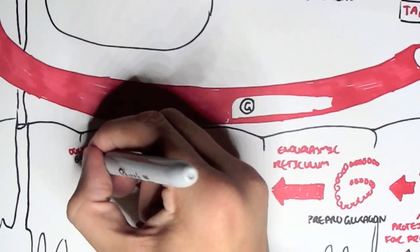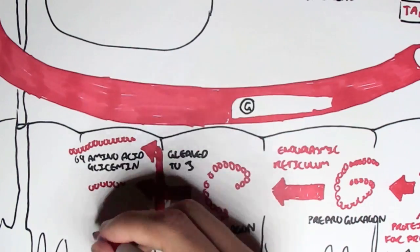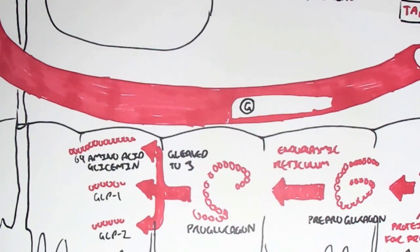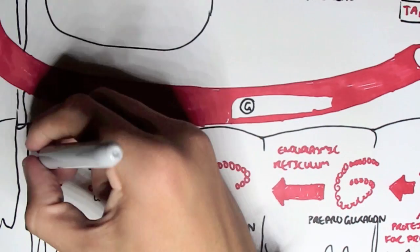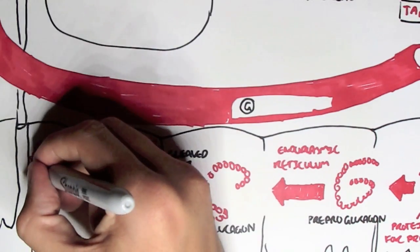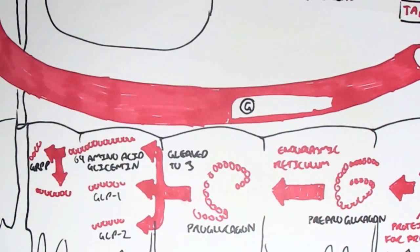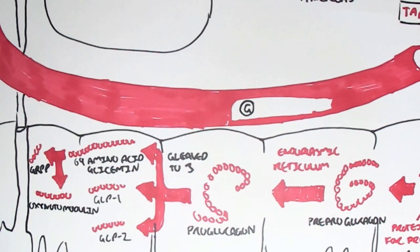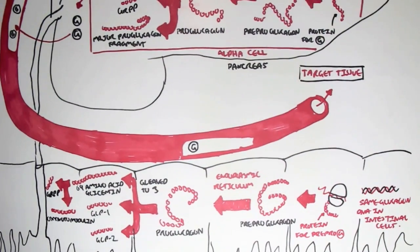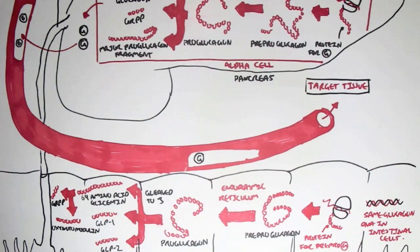These polypeptides are: the 69 amino acid glycentin, glucagon-like peptide 1, and glucagon-like peptide 2. Glycentin can also be cleaved into two other peptides: GRPP (glycentin-related pancreatic peptide), exactly the same as the one from the alpha cells, and also another one called oxyntomodulin. Interestingly, oxyntomodulin has a potential role in suppressing appetite — something interesting to note.